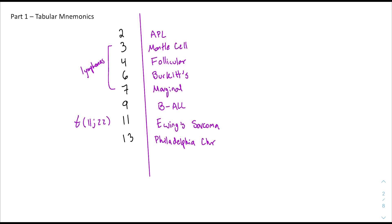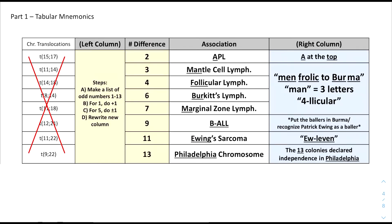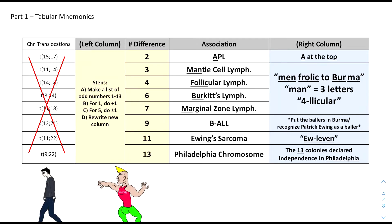If you can practice getting the table in this form, you have a lot of easy associations between the pathologies and whatever chromosomal translocation you're given. We can combine it all together to get the final form of the table. You can compare the Chad method — memorize 8 different unique numbers — to the Virgin method — memorize 16 where they all sound really similar.